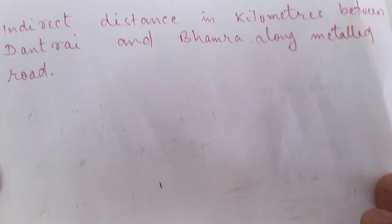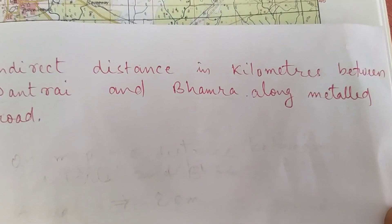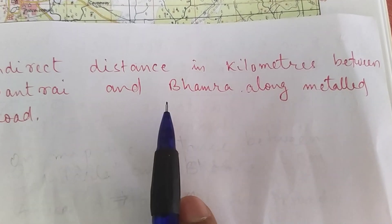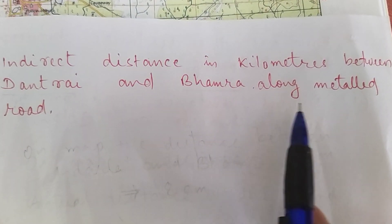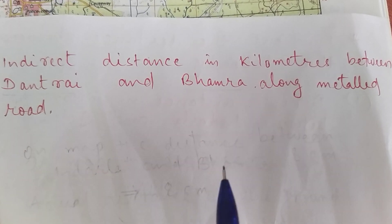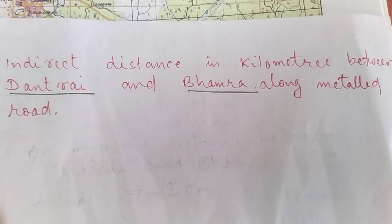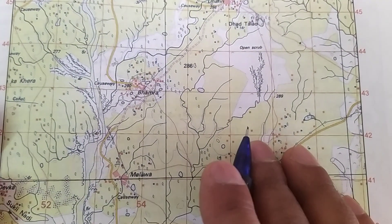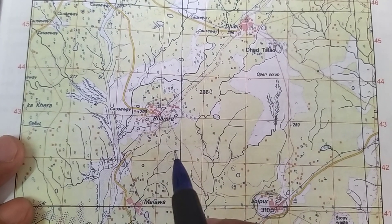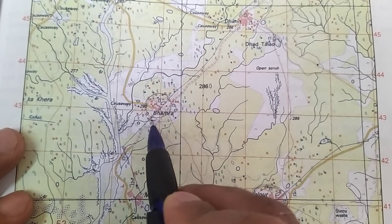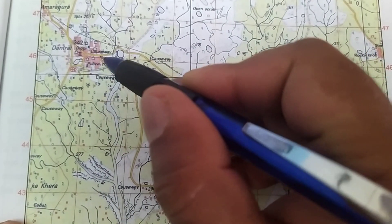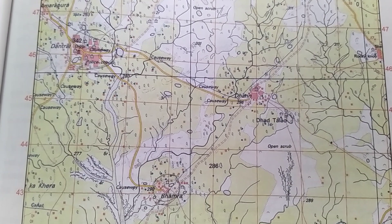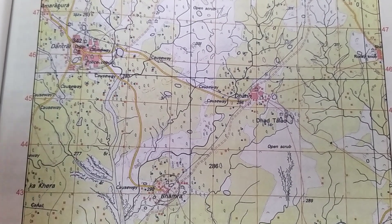The next question is the indirect distance in kilometers between Dantarai and Bhamra along the metal road. We have to search for these two villages on the topographical map. Here we have village Bhamra and here we have Dantarai. With the help of a thread we have to measure this distance — a thread will be provided to you during the examination.